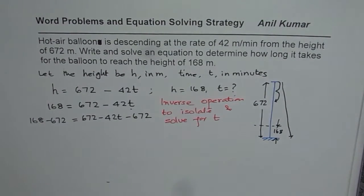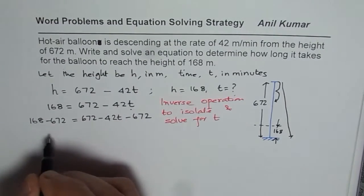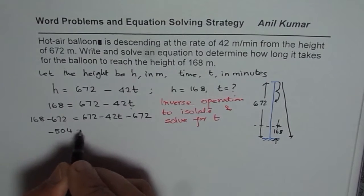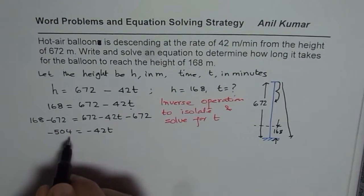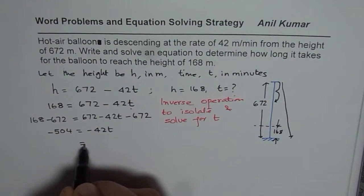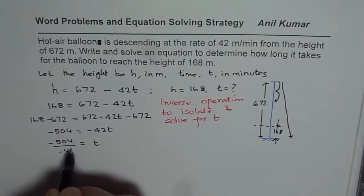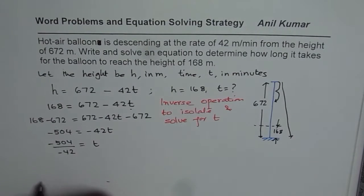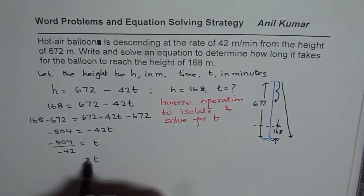168 minus 672 equals minus 504, so we get: −504 = −42T. To find T, we divide both sides by −42. T equals −504 divided by −42. A negative divided by a negative becomes positive, and 504 divided by 42 gives us 12.